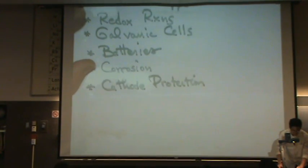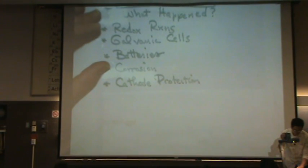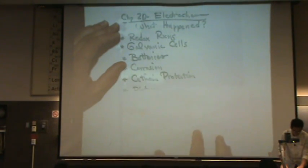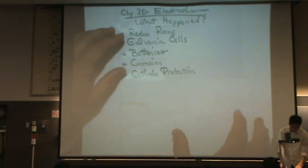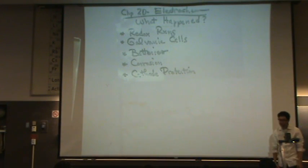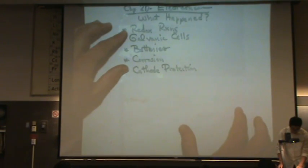We learned about cathode protection. That's protecting the cathode by putting a sacrificial anode there. There are other ways to protect the cathode: by painting things, by plating things, making alloys, etc.